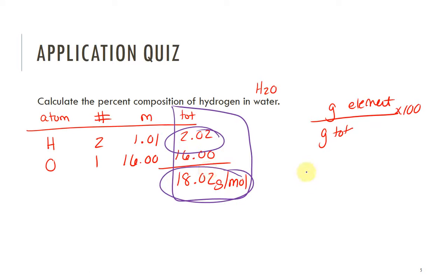So this would be 2.02 grams of hydrogen over the 18.02 grams of the whole molecule, and you multiply by 100, and you end up getting 11.21 percent hydrogen.